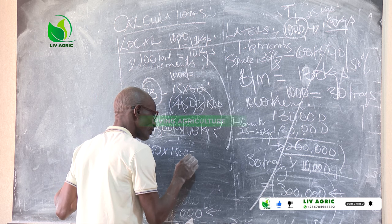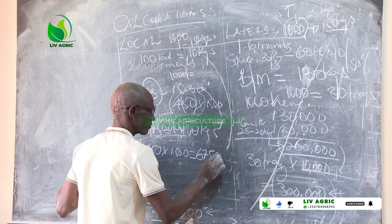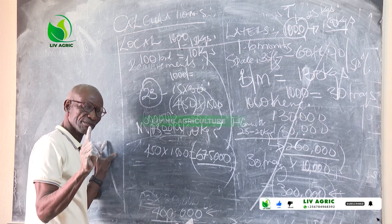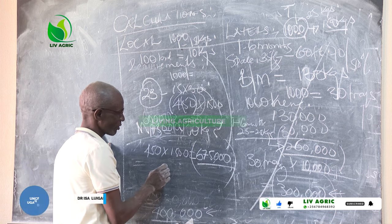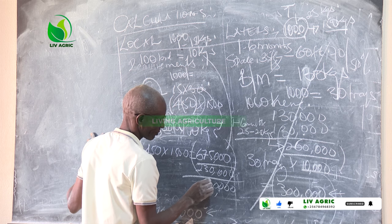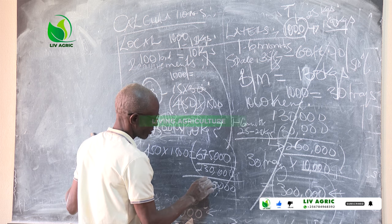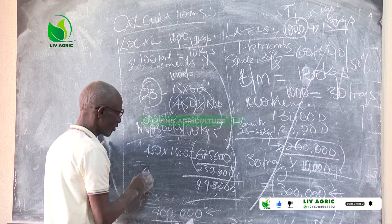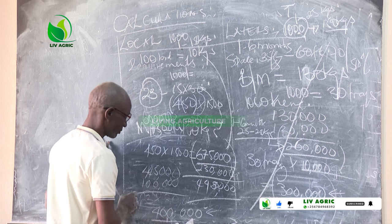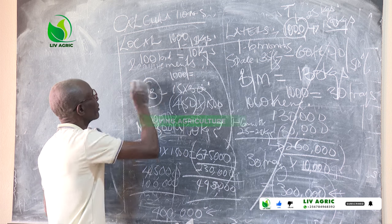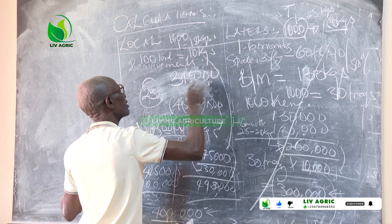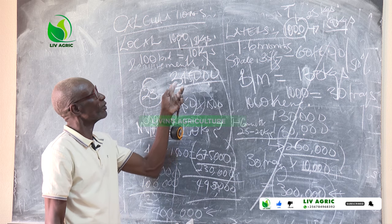The price was 1,500 — giving us 600 to 675. Let's subtract our expenses: 445 minus 100. This gives us 445,000 as net income from hatching in one day.